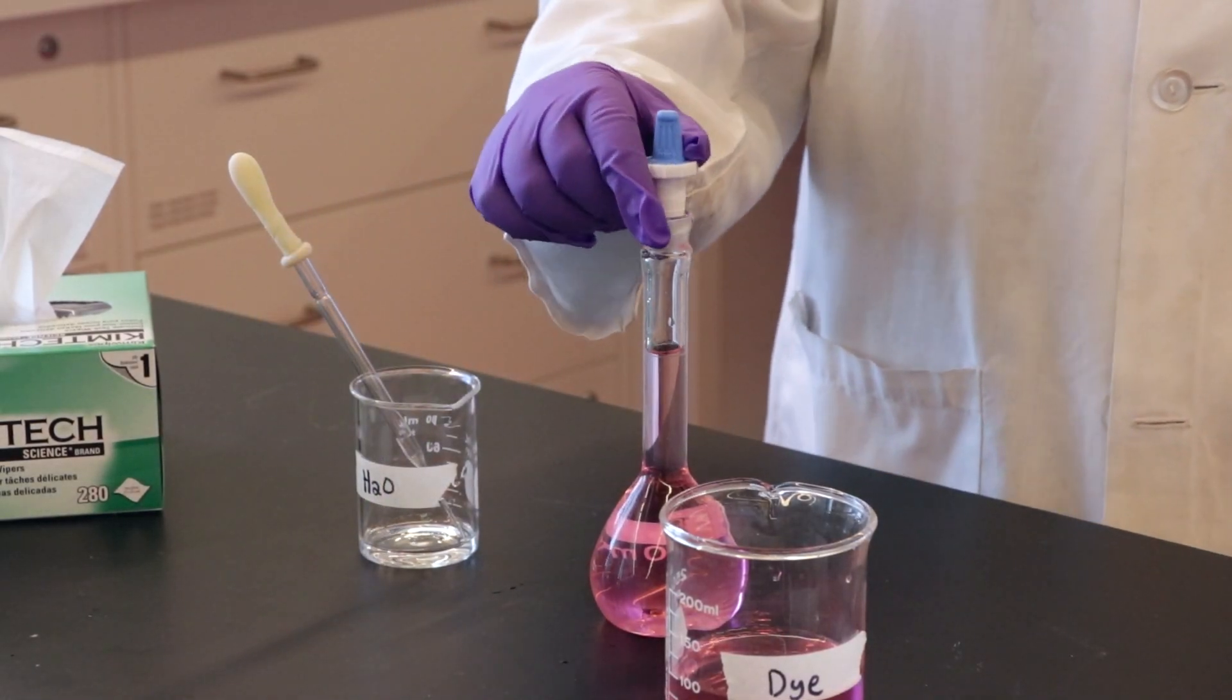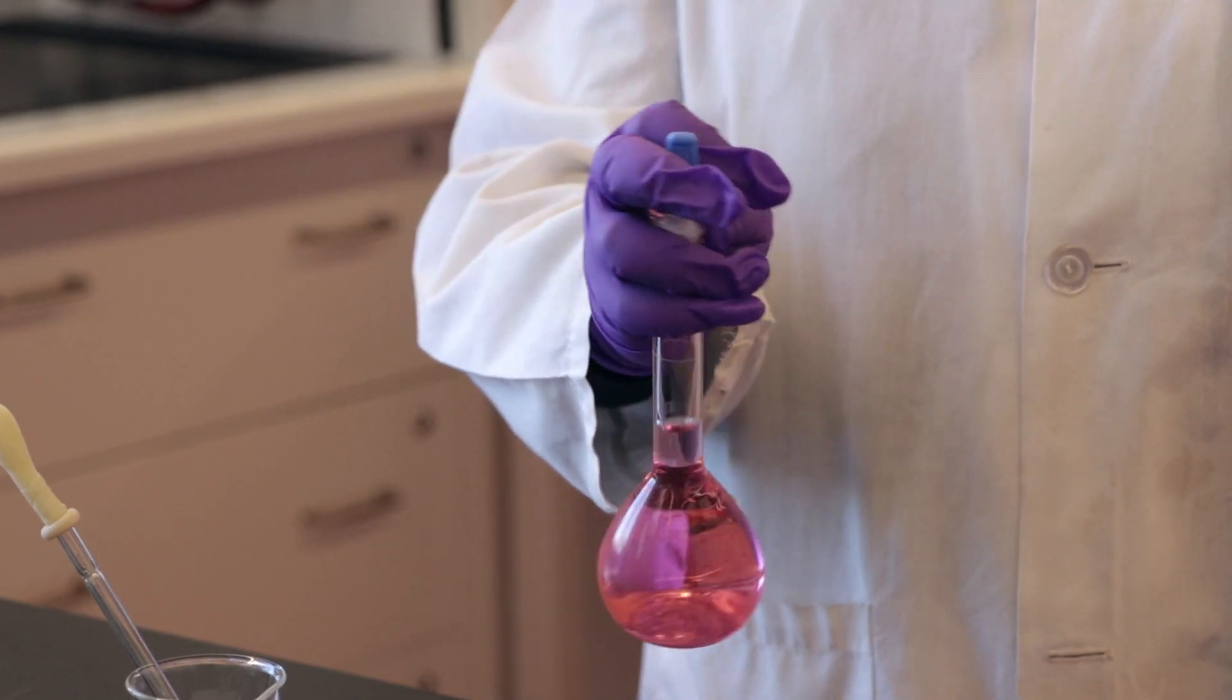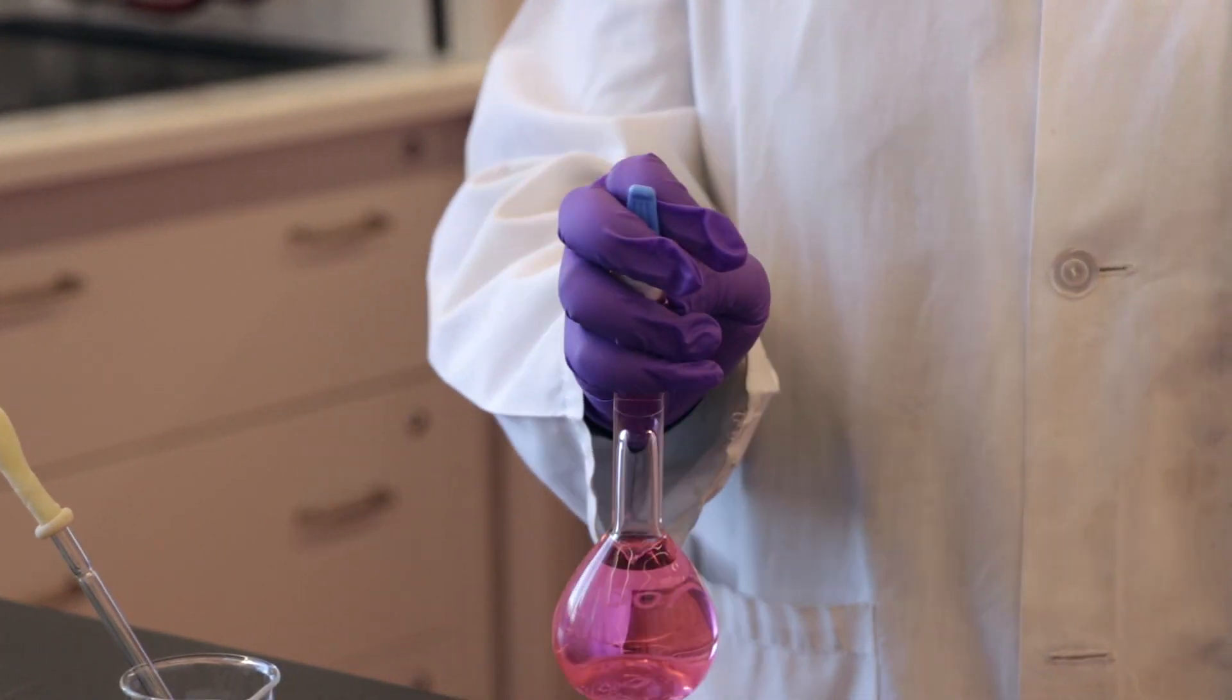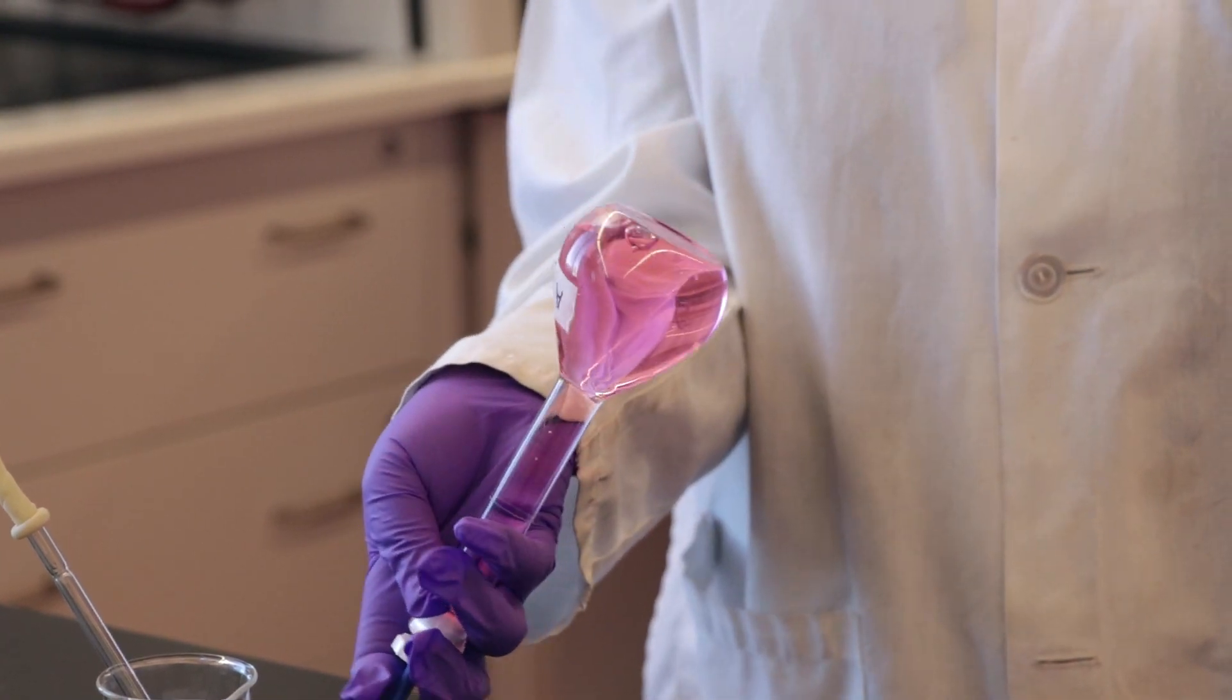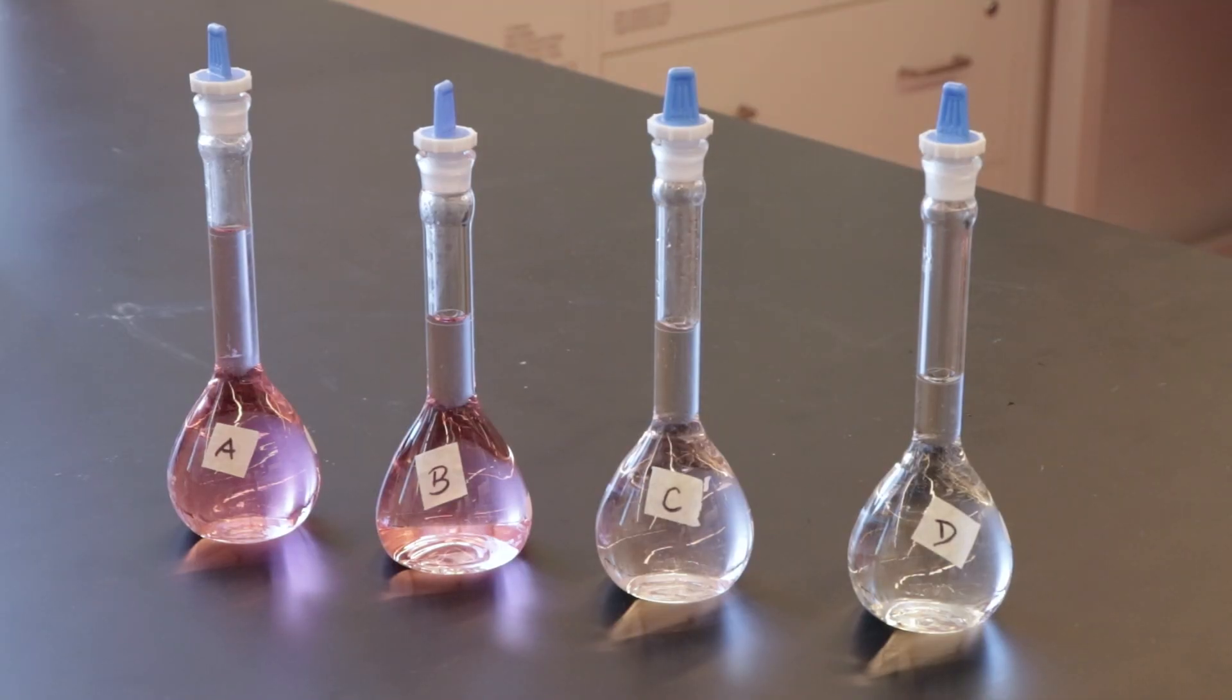Mix the solution by inverting the flask approximately 20 times. Make sure that you are careful and that you have a tight seal on the flask or else it will spill and you'll have to remake the solution again. Repeat this procedure for solutions B, C, and D.